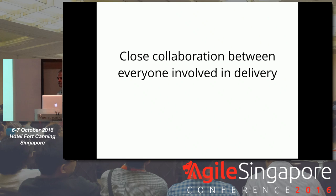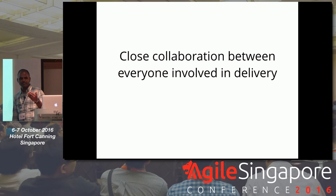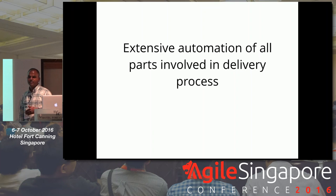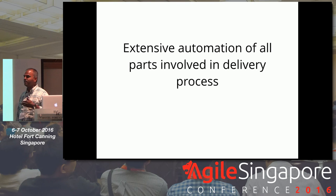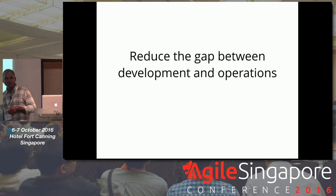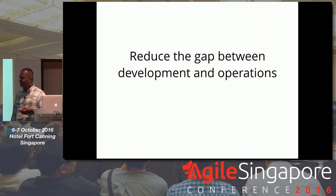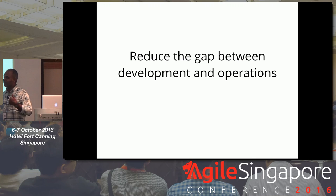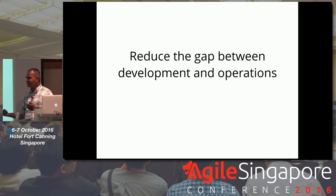So how do you achieve continuous delivery? One is close collaboration between everyone involved, including business all the way down to ops. A corollary to that is automation — if you're releasing frequently, you don't want to do those frequent releases manually. It's a lot of work, mistakes happen. So you want to automate as much as you can in this whole delivery pipeline. You also want to reduce the gap between development and ops — you should be responsible for that code and work closely with ops people.